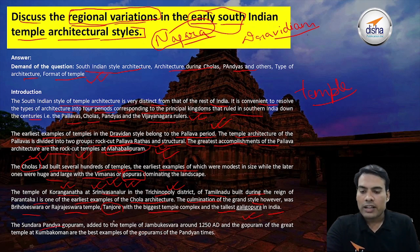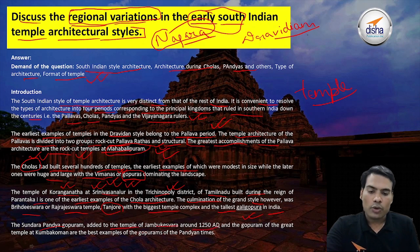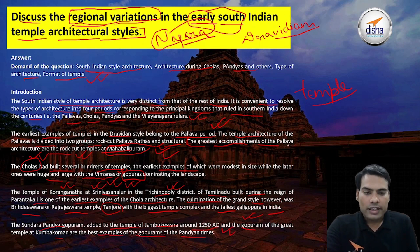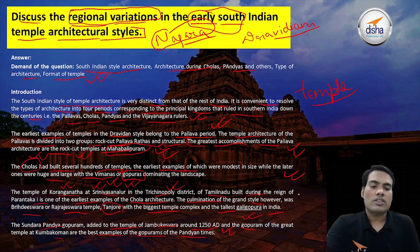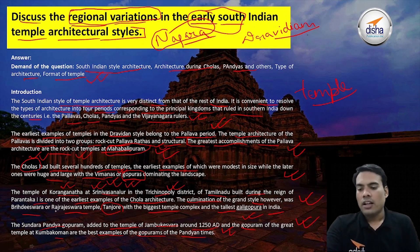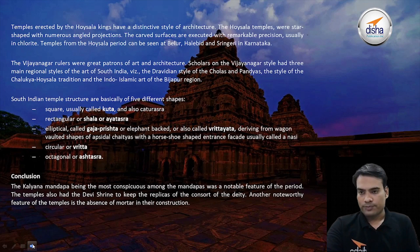The Sundar Pandya gopuram added to the temple of Jambukeshwar around 1250 AD, and the gopuram of the great temple at Kumbakonam, are the best examples of gopurams of Pandyan times. Three different styles of temples at different places have been explained, which is the exact answer needed for this question.